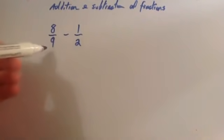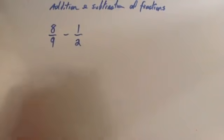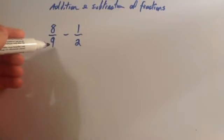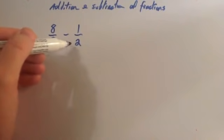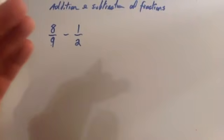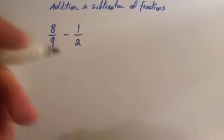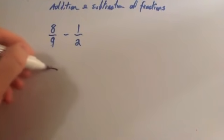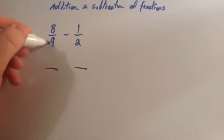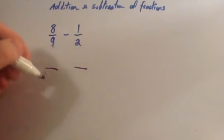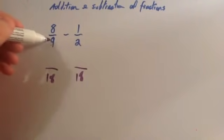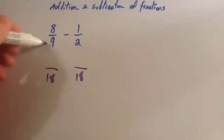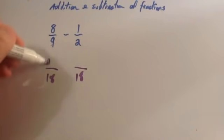We're now going to do eight-ninths subtract a half. We want to get a common denominator, so let's think of a common multiple of nine and two. A number in the nine times table and the two times table would be eighteen. You can use bigger common multiples as well — you could use thirty-six — but you'll find that you'll need to cancel down your answer. So I always try to find the lowest common multiple, which for nine and two is eighteen. So we'll use eighteen as the denominator. To get from nine to eighteen, you multiply by two, so eight times two is sixteen.